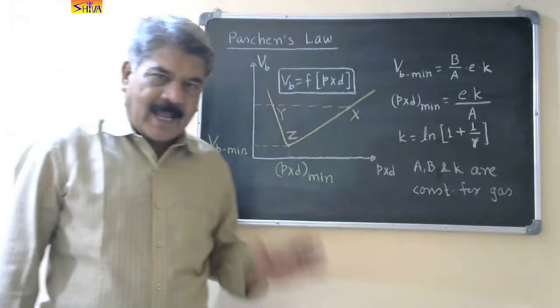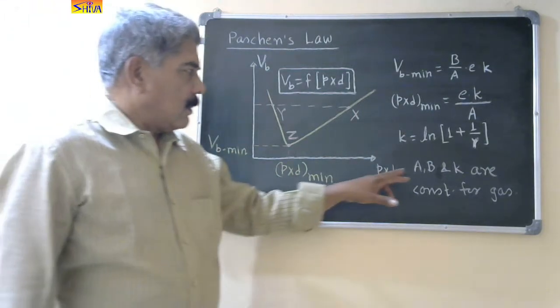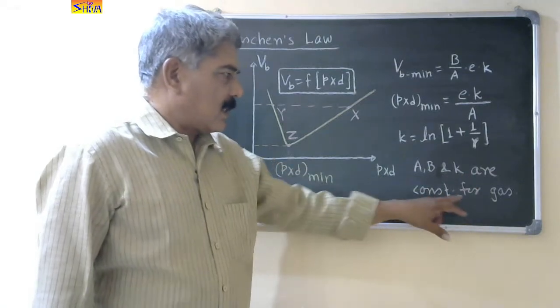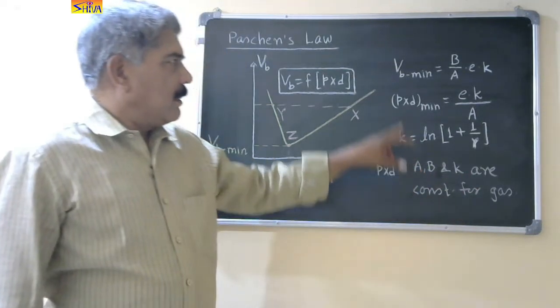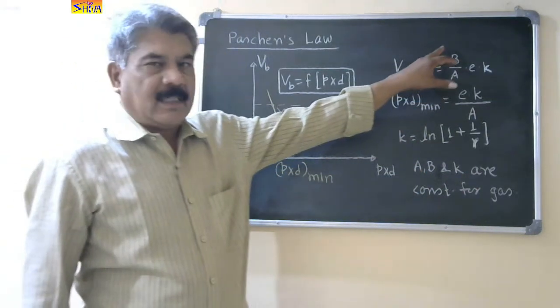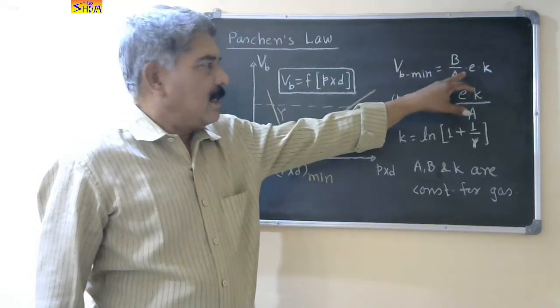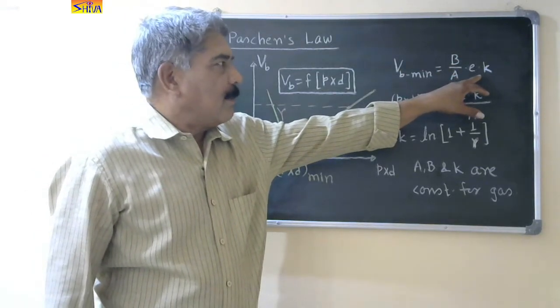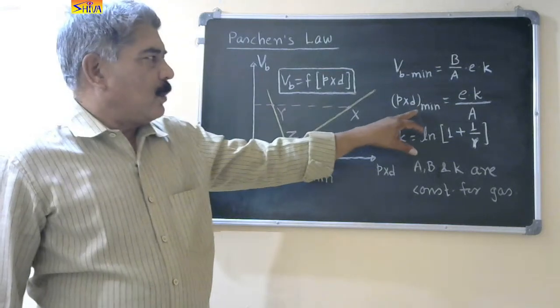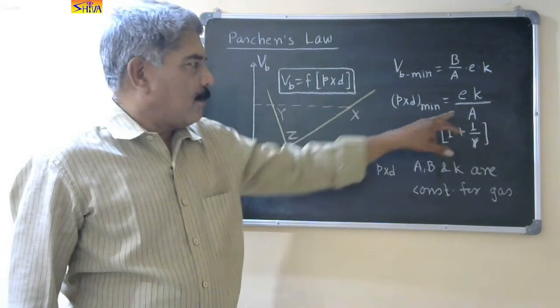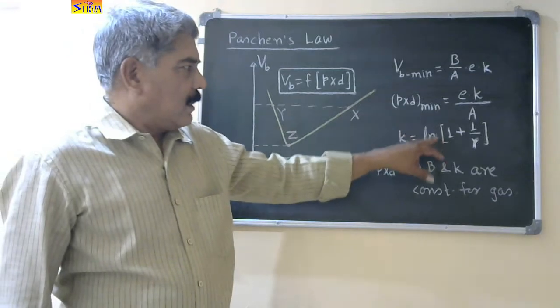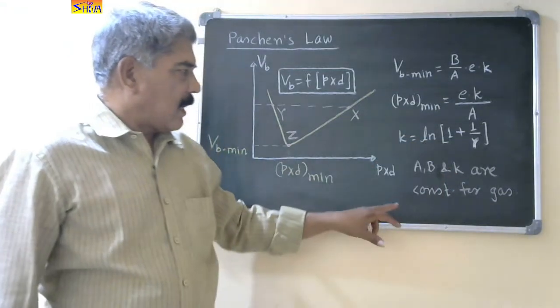Now for a particular gas, a, b and k are constants. Then Vb minimum is obtained by this equation, b upon a, p is exponential, multiplied by k. P into d minimum is p into k upon a and k is ln in bracket 1 plus 1 upon gamma.